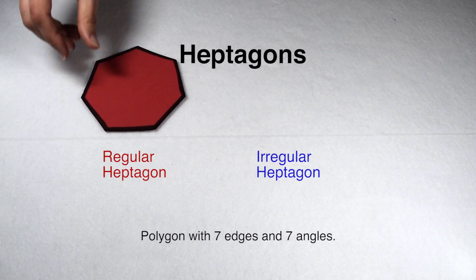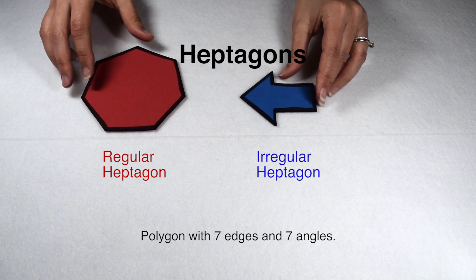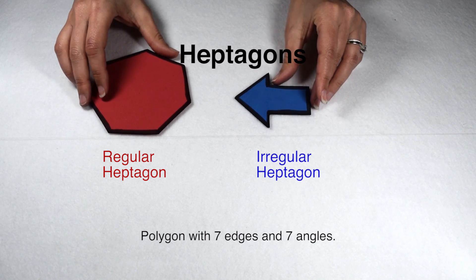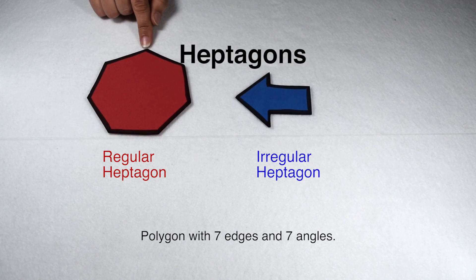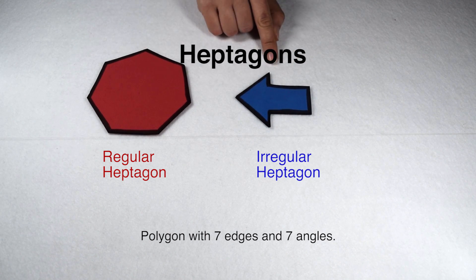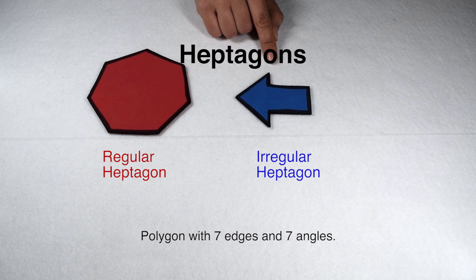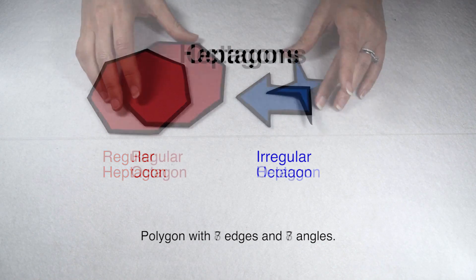When we create a seven-sided polygon, we've created a heptagon. Regular heptagons probably aren't as familiar to you as irregular heptagons. A lot of arrows are actually irregular heptagons when you see them just outlined.